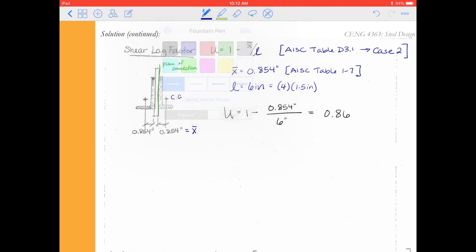We can do our calculation for our effective area. Our effective area is now our net area times u. We pull that net area from the previous page. That was 4.89 inches squared. That was our controlling net area times our u factor, 0.86. And that gives us a total effective area of 4.21 inches squared. Again, we're doing this all for one angle.